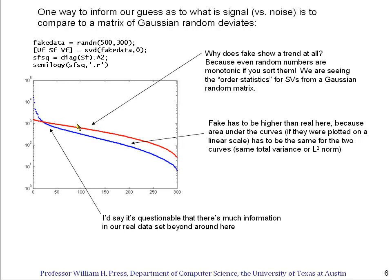Now, why does the fake data show any trend at all? Why doesn't it have just all of its singular vectors about equal? Well, the answer is we've sorted them. They really are all about equal in any statistical distribution sense, but once we sort them from biggest to smallest, we get to see the order statistics of singular vectors from a Gaussian random matrix. The reason the red curve is higher than the blue curve is simply that the areas under the curves have to be the same. We've standardized the data to be 300 experiments, all of zero mean and unit variance.